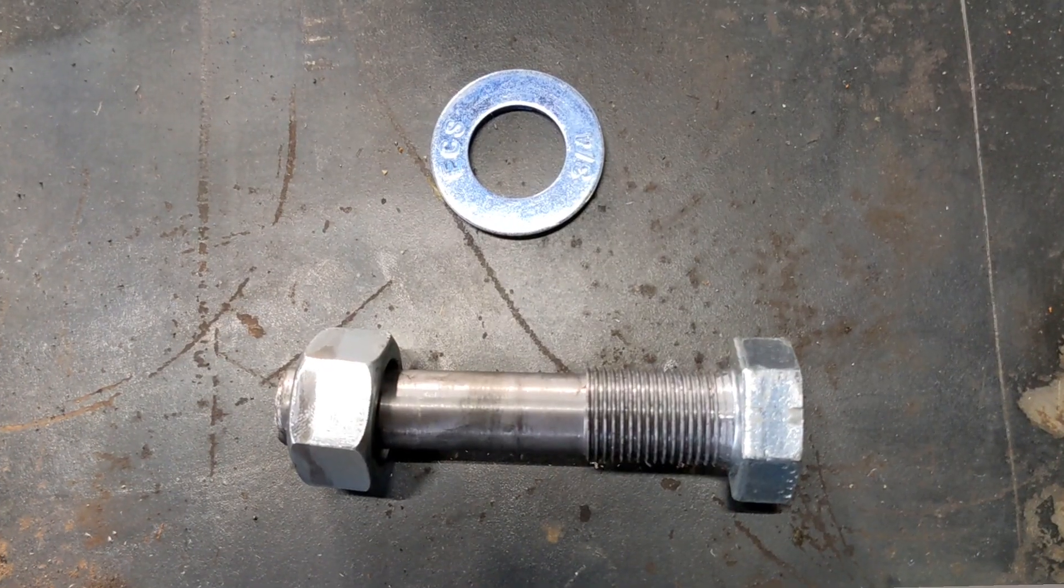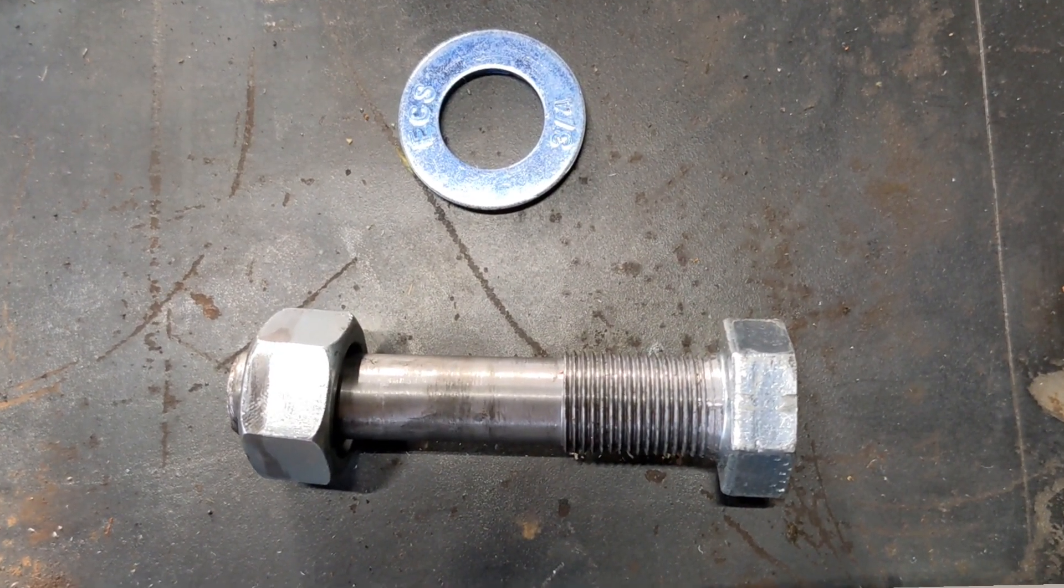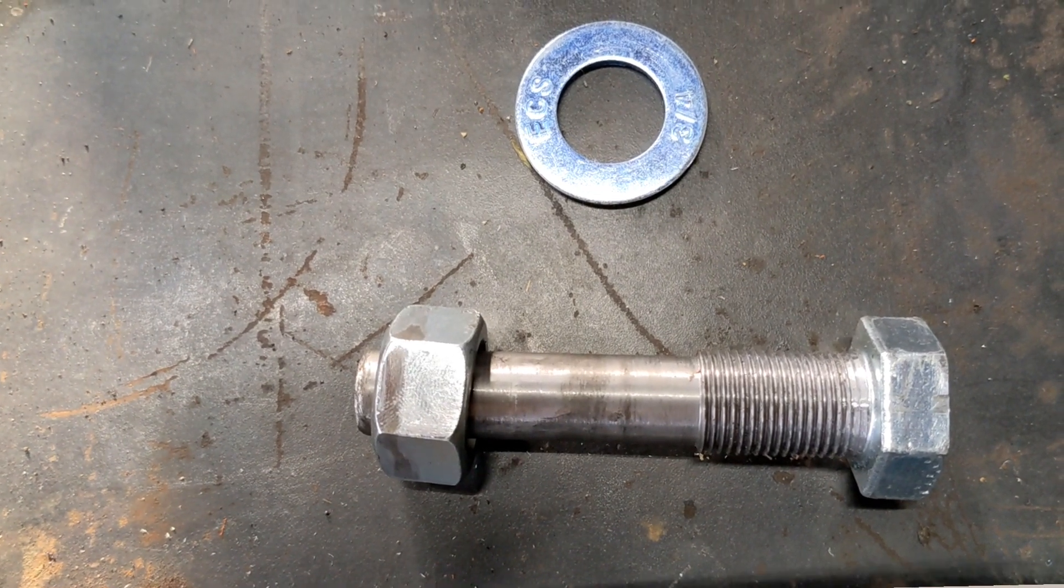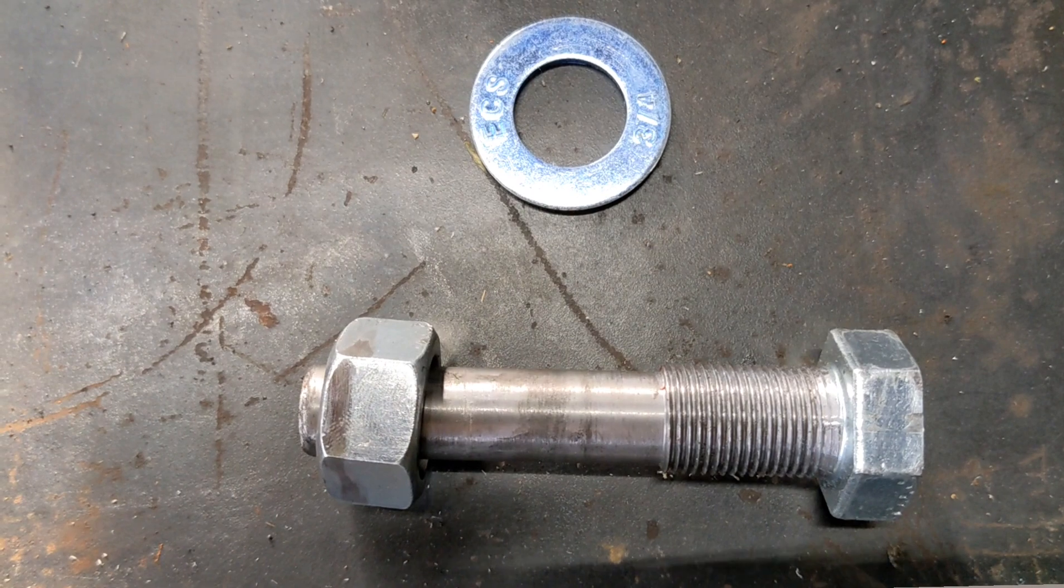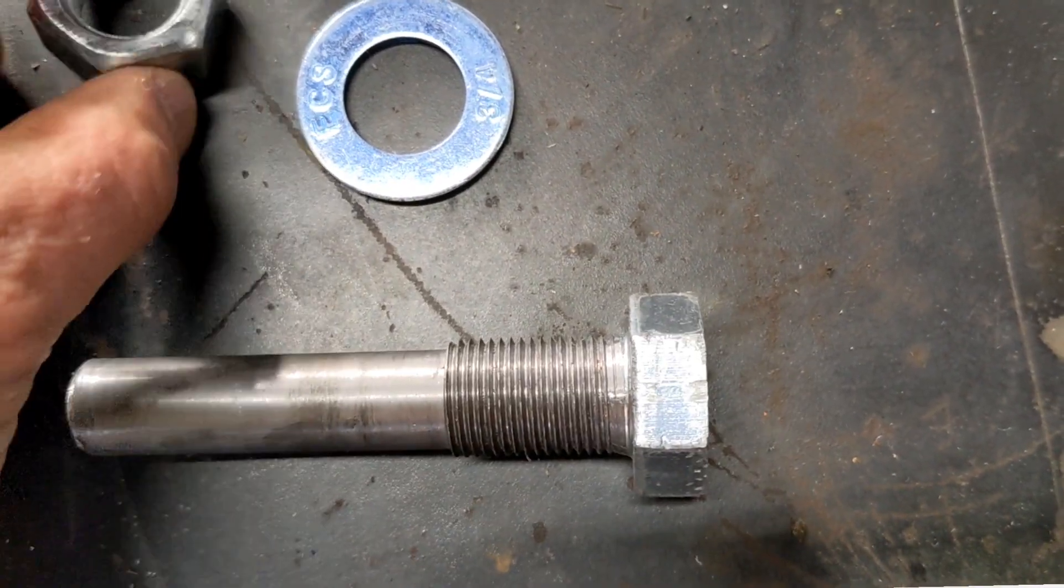I ran a die down it, and the end is cut back to I think 0.650-something inches. It's whatever a slip fit through the bores in the jack handle would be. This is obviously the nut. What this does is it will reach through both pieces over here.